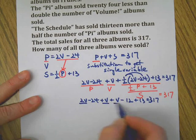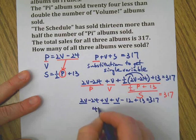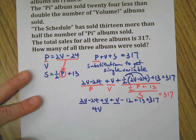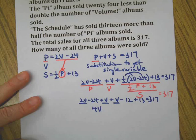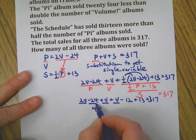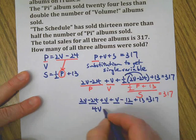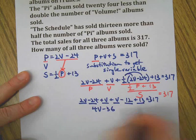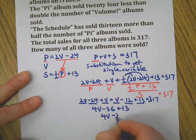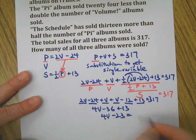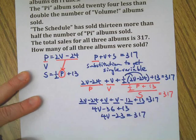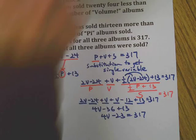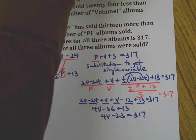Now I'm going to put all the V's together. There's 1, 2, 3, 4 of them—4V. Then I'm going to put all the numbers together. There's negative 36, and there's plus 13. So that makes negative 23. So 4V - 23 = 317.